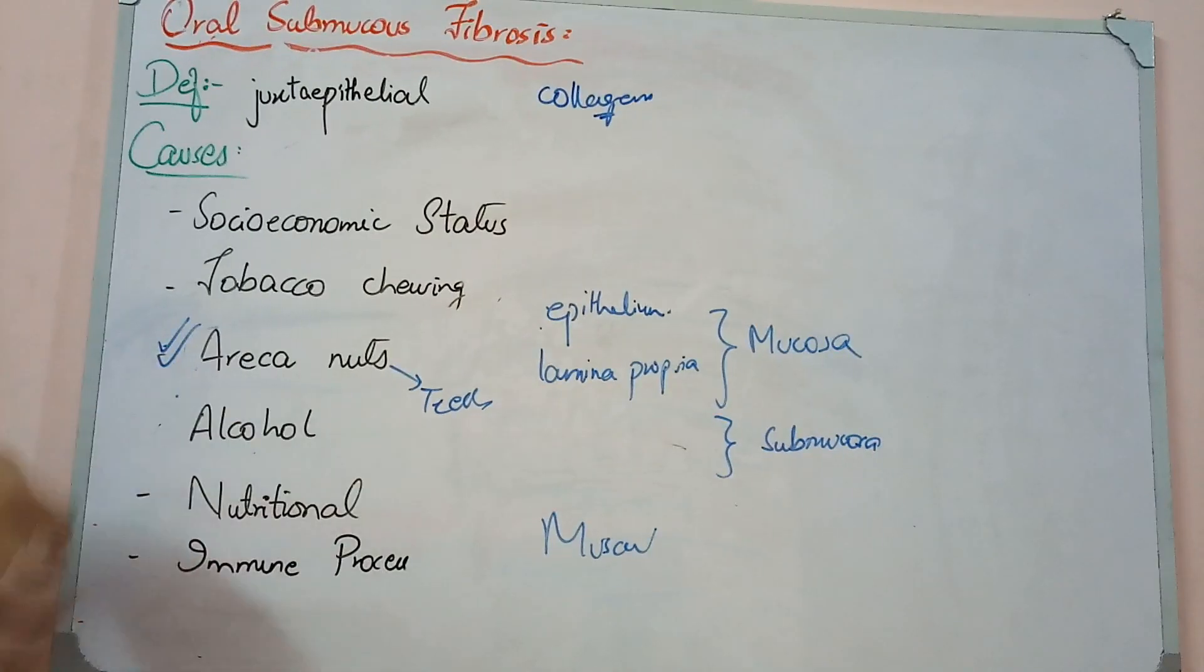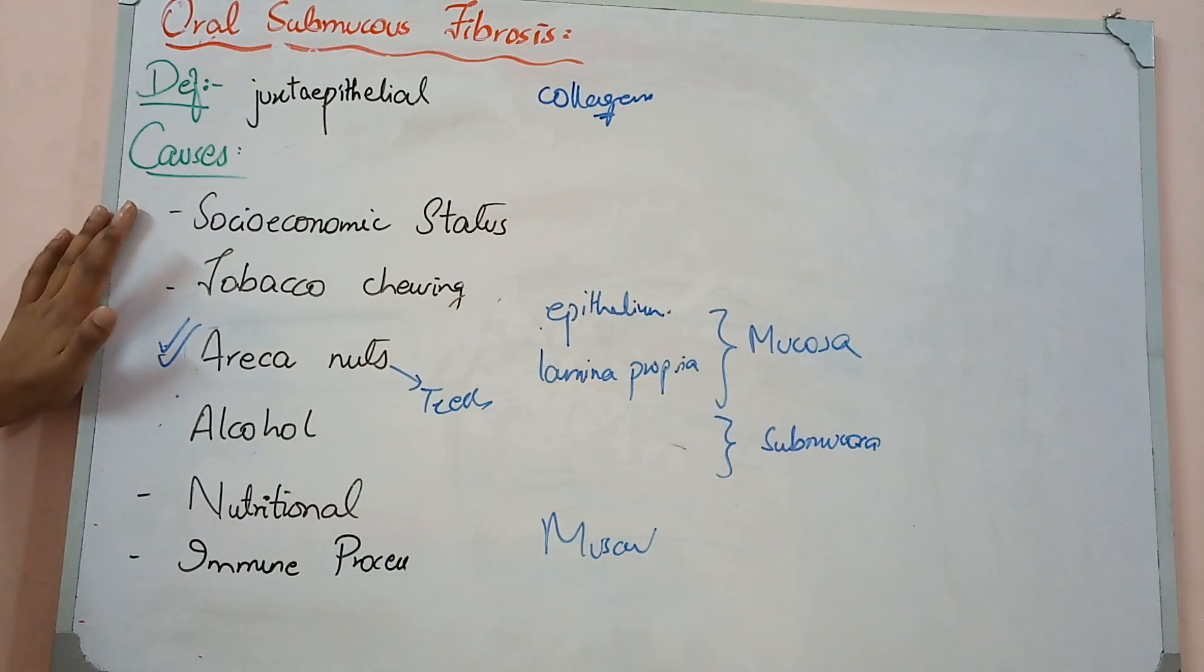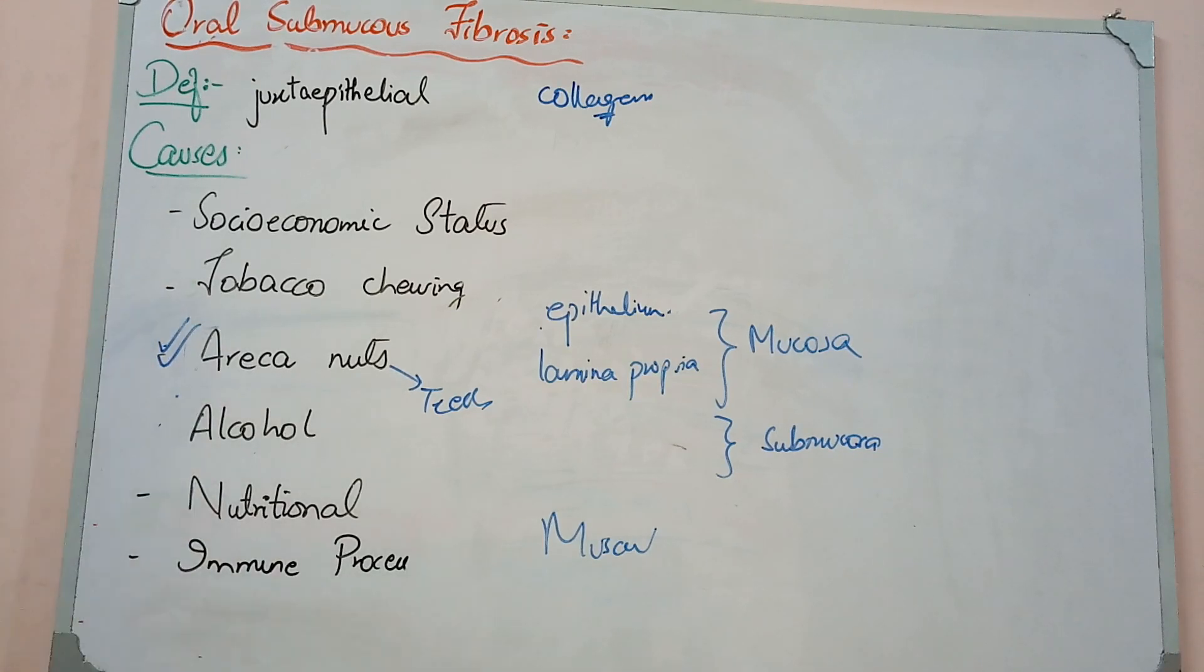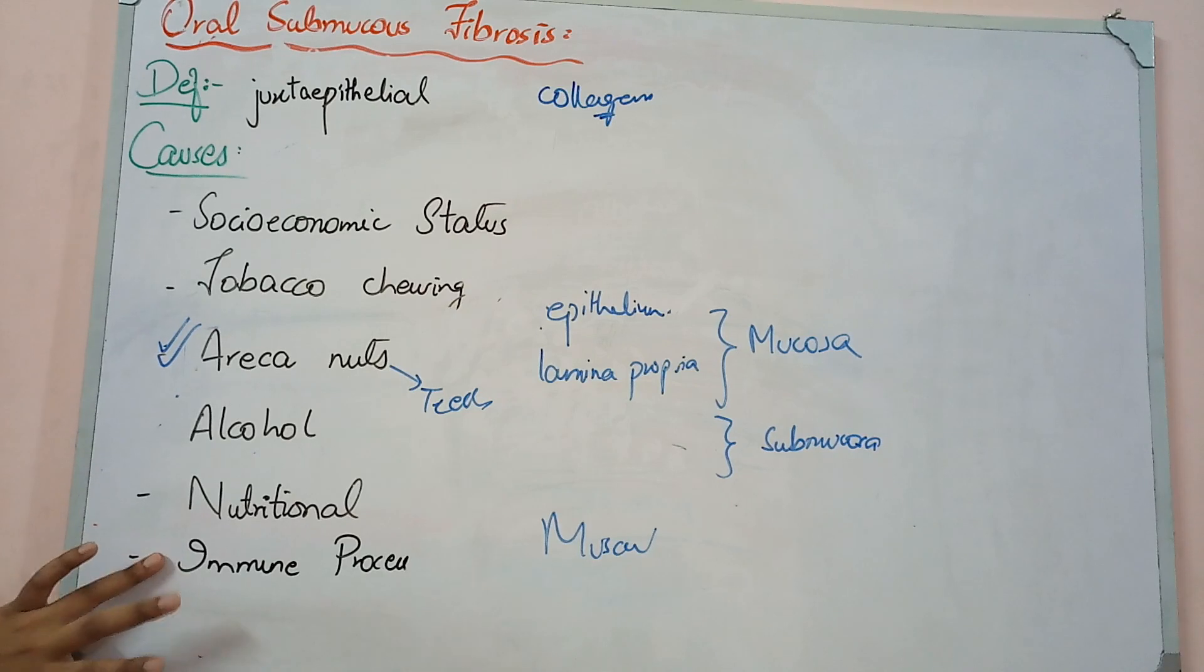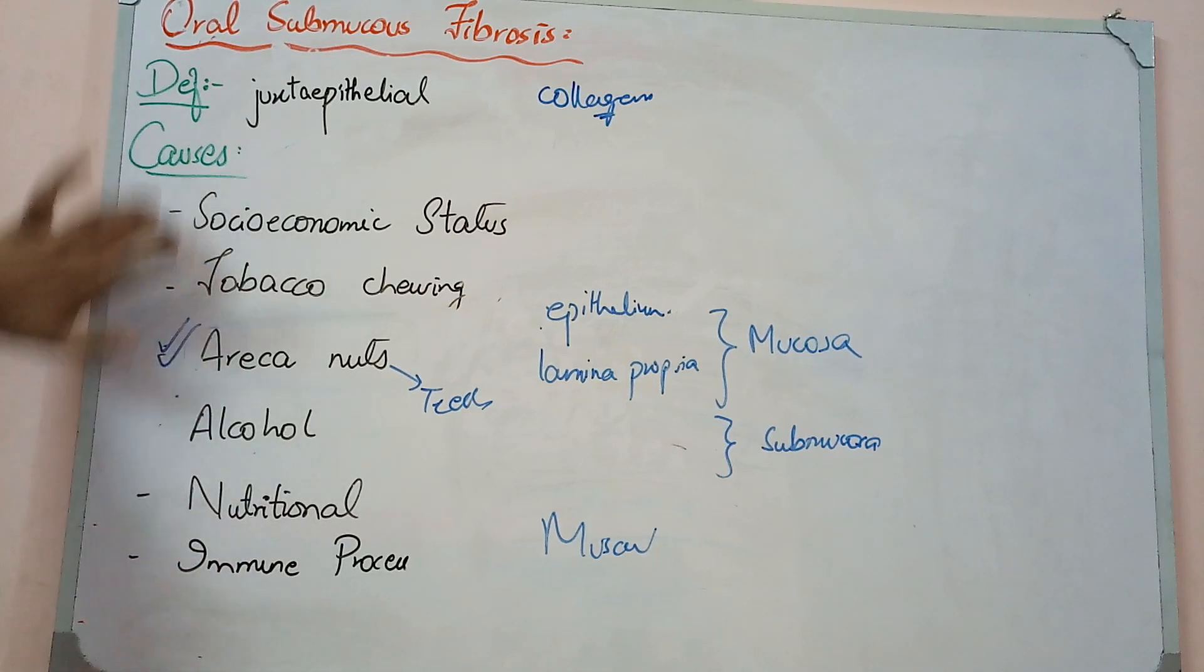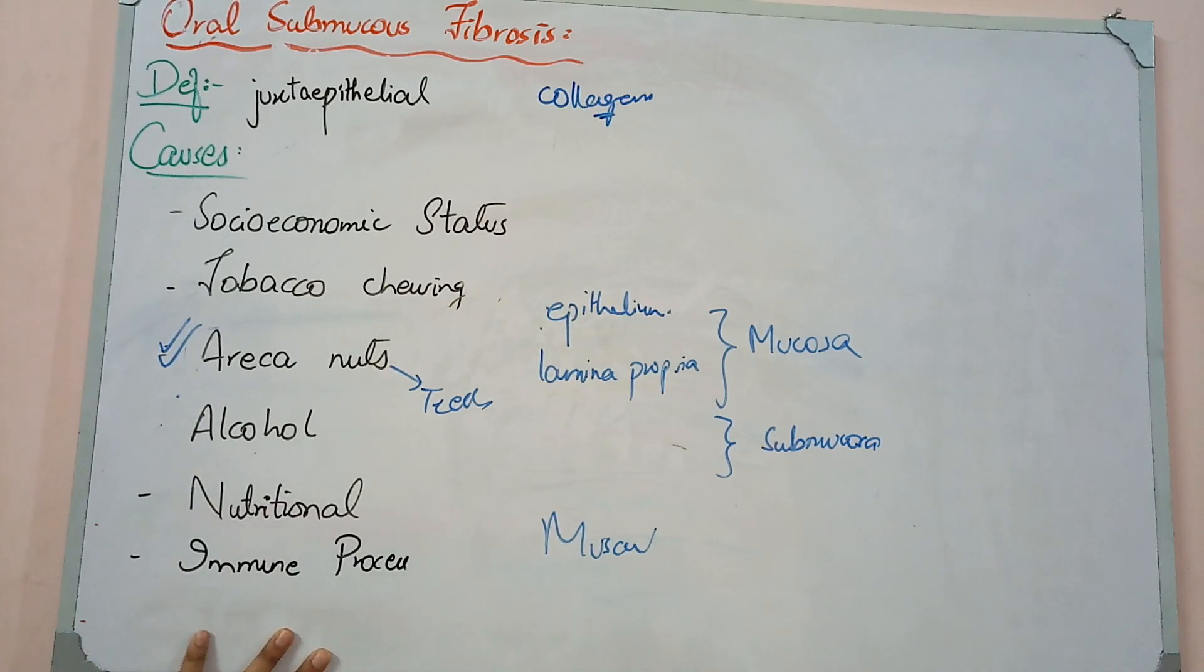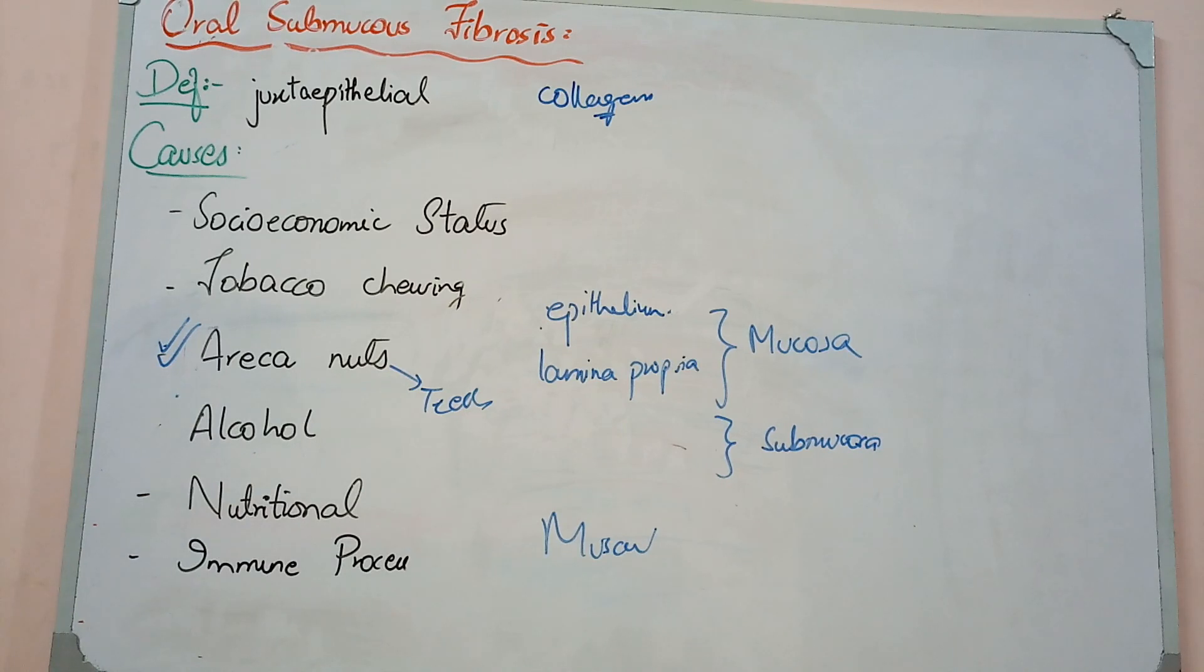Risk factors include areca nuts, low socioeconomic status, tobacco chewing, cigarette smoking, alcohol, nutritional and vitamin deficiency, and immune processes. Even without other conditions, people can develop oral mucous fibrosis through immune activation. There are multiple factors, so we say it has multifactorial causes.